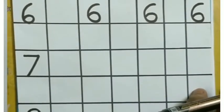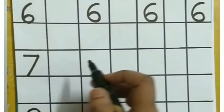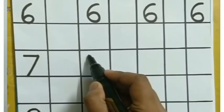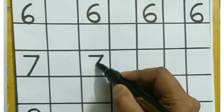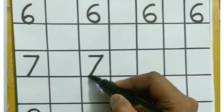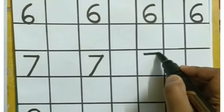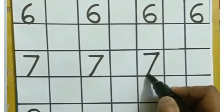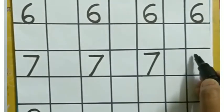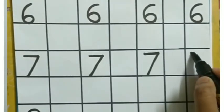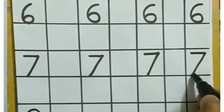So next is number 7. How to write number 7? One sleeping line and a slanting line makes number 7. Sleeping line and slanting line.